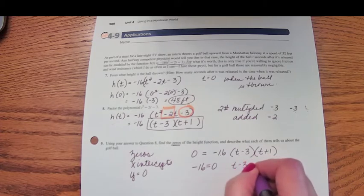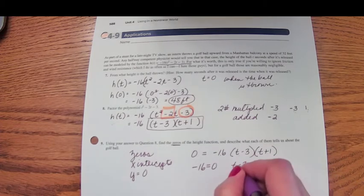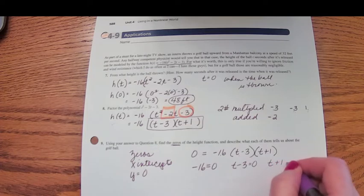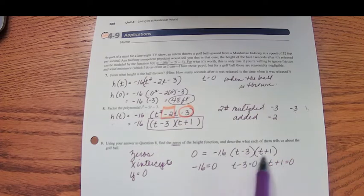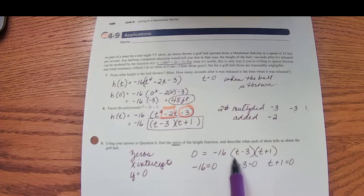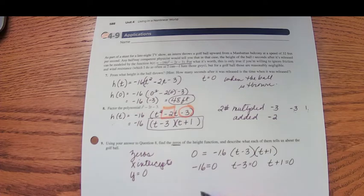...or t minus 3 equals 0, or t plus 1 equals 0. One, two, three factors—three things I'm multiplying together. If the result is 0, either the first, the second, or the third factor equals 0. Now let's look at this: will negative 16 ever equal 0? No, so we're going to disregard that as a possible solution.